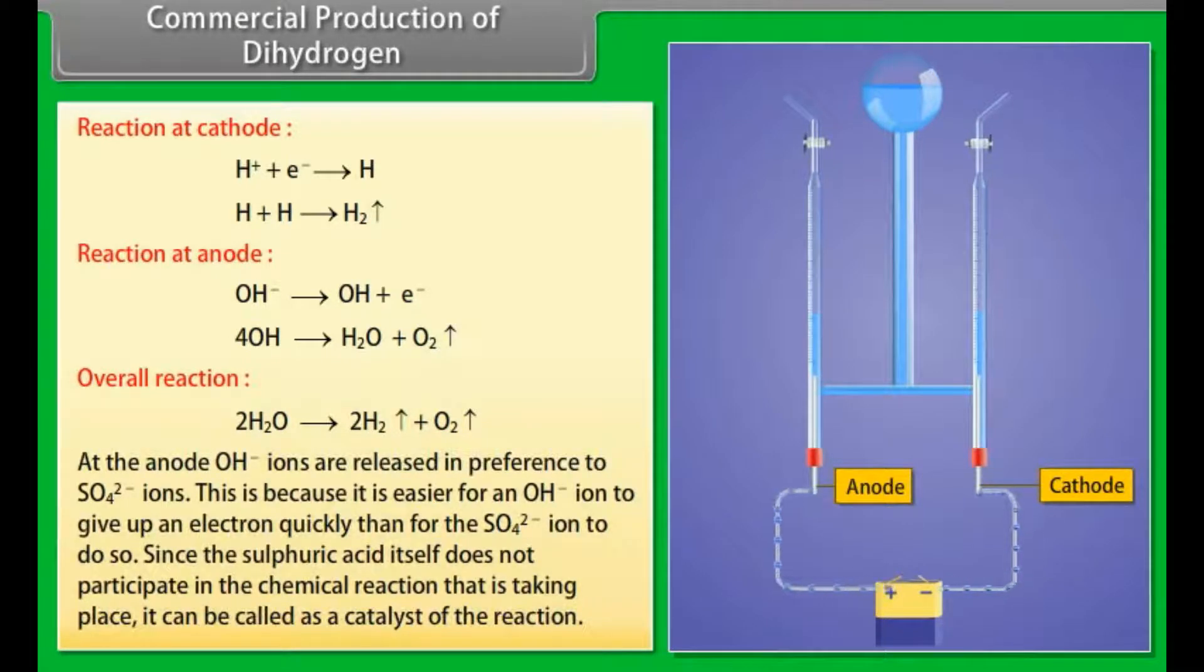At the anode, OH minus ions are released in preference to SO4 2 minus ions. This is because it is easier for an OH minus ion to give up an electron quickly than for the SO4 2 minus ion to do so. Since the sulphuric acid itself does not participate in the chemical reaction that is taking place, it can be called as a catalyst of the reaction.